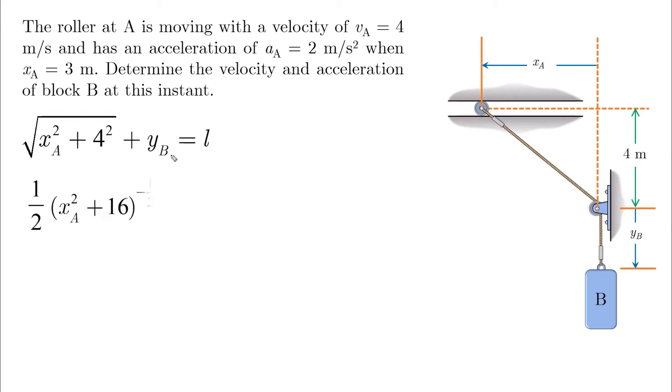By taking the first derivative, the square root is just a bracket to the power one half. We take the one half down and the power becomes minus one half. Then we take the derivative of xA squared, which by chain rule becomes 2xA times the time derivative of xA, which is x dot A. The derivative of yB is y dot B, and this equals zero because the length is constant.